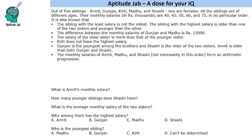Hello everyone, welcome to Aptitude Jab. This is a caselet. It says that there are 5 siblings, out of them there are 2 females — so 2 sisters and 3 brothers — and they are of different ages. Their monthly salaries are given as 40, 45, 50, 60 and 75 thousand in no particular order. We are given some more information regarding their salaries, and we need to find whose salary is how much and what is the order of their ages.